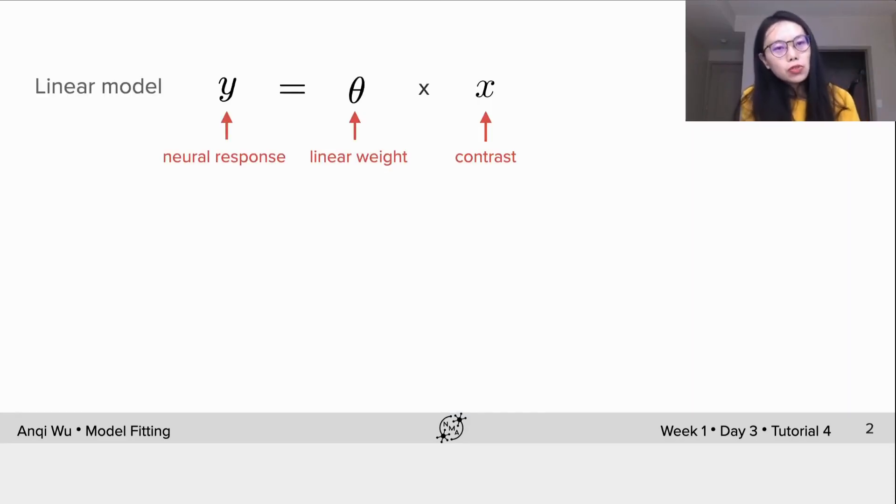In all previous tutorials, we've been talking about linear regression model with the scalar input x and a scalar output y, with only one parameter the linear weight theta. But as we introduced at the very beginning, a more general linear model for scalar input and output would be this, where theta1 is the linear weight and theta0 is the intercept.